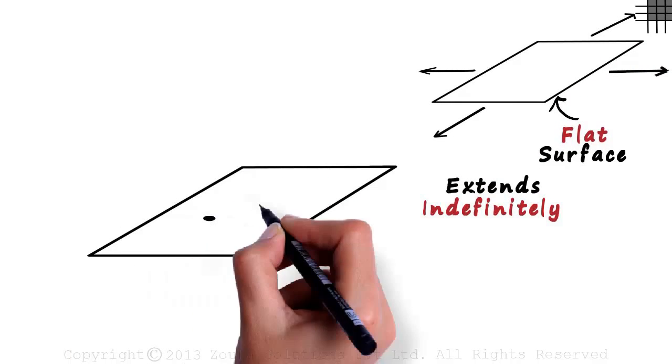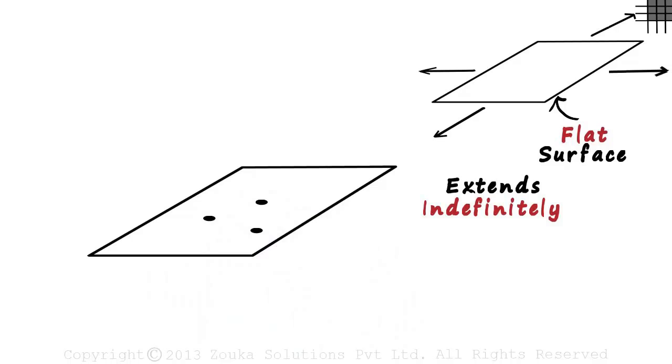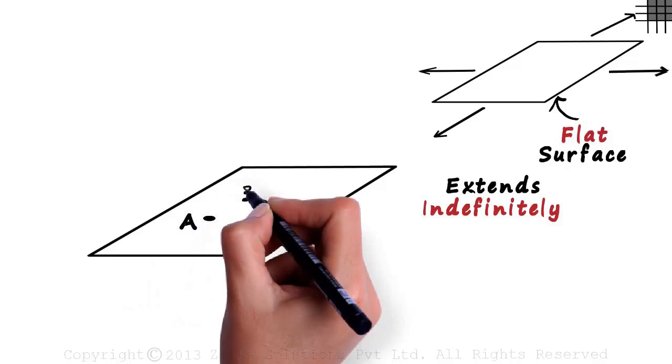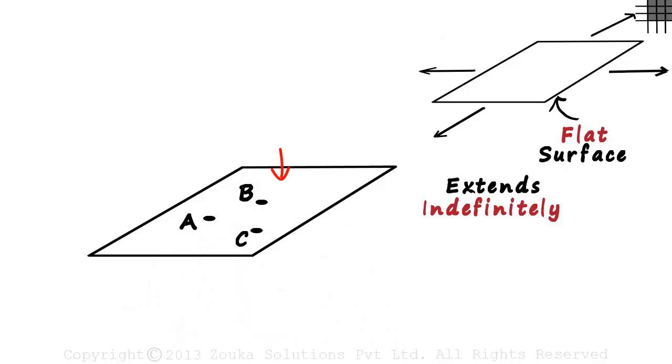The first thing we should know is that a plane has infinite points on its surface. Say these three points are A, B and C. This plane can be called ABC.